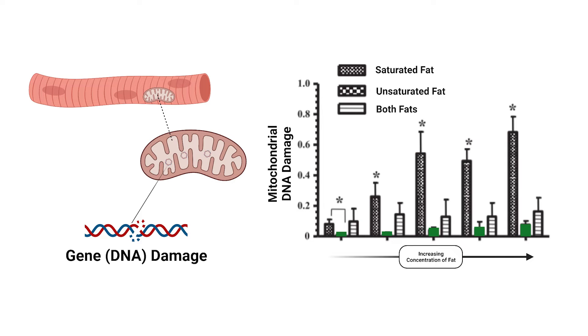This is consistent with the data from the previous study. However, that effect was not experienced when the muscle cells were exposed to unsaturated fat, and there was a protective effect of unsaturated fat when the two fats were combined. This is really cool data, because it implicates saturated fat significantly in causing DNA damage, and also shows that pairing saturated fat with unsaturated fat ameliorates the effect.